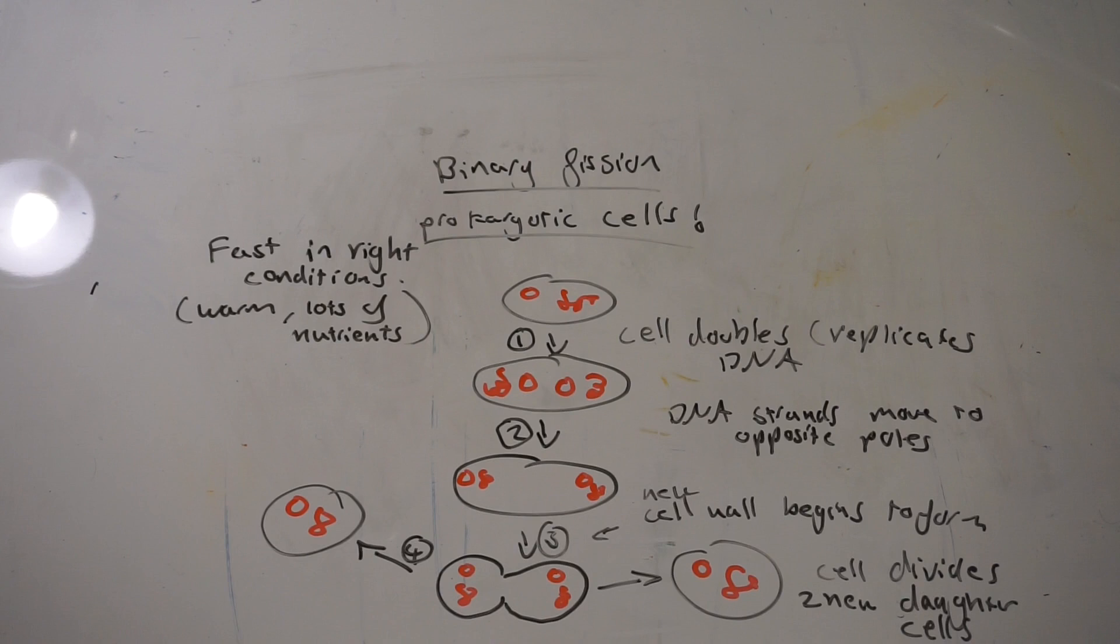Then the cell gets bigger, allowing it more room to replicate. So basically the cell membrane grows, and both the circular DNA and the plasmids move to opposite ends of the poles.